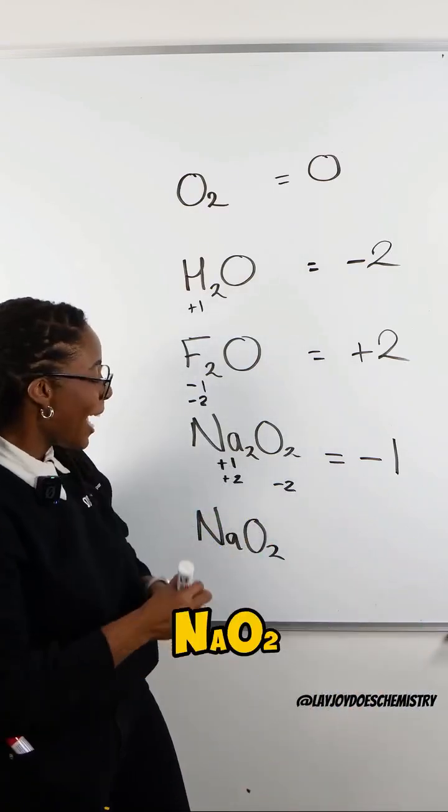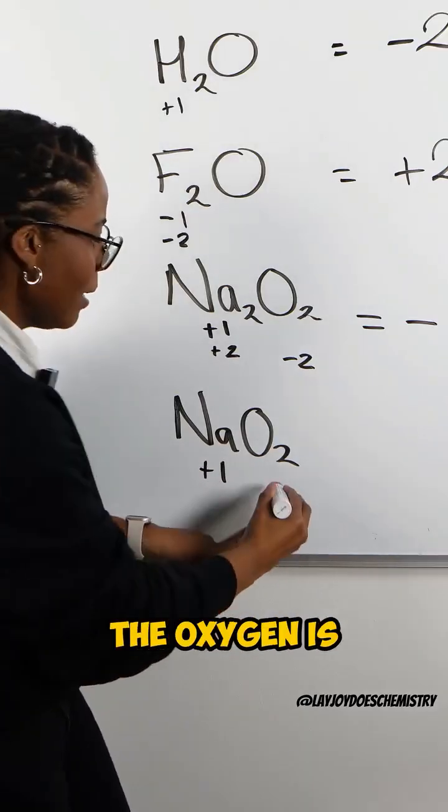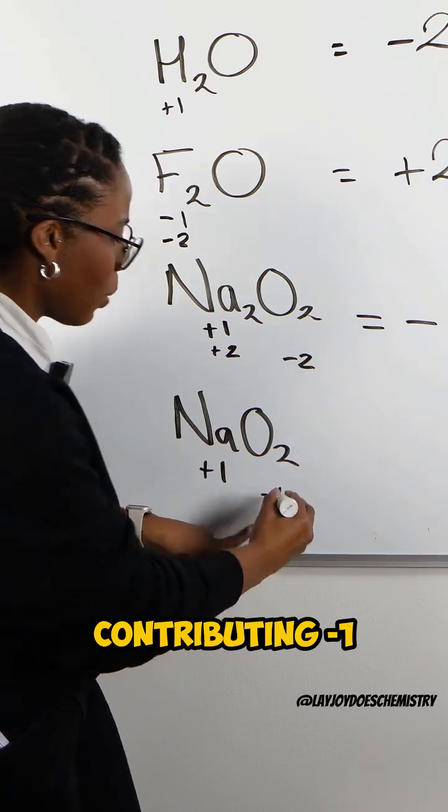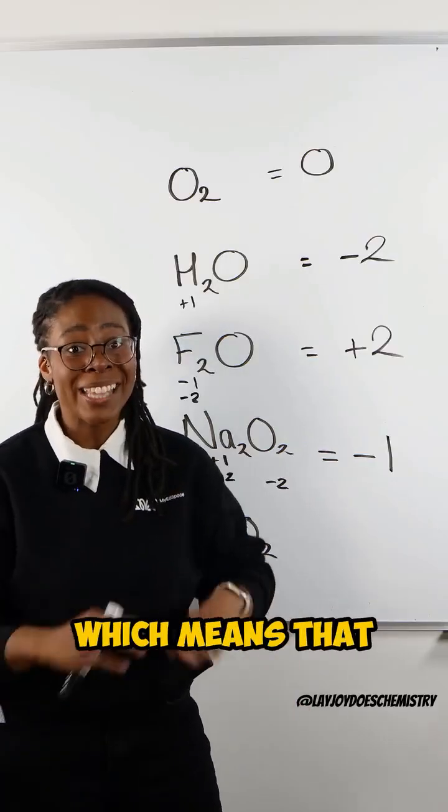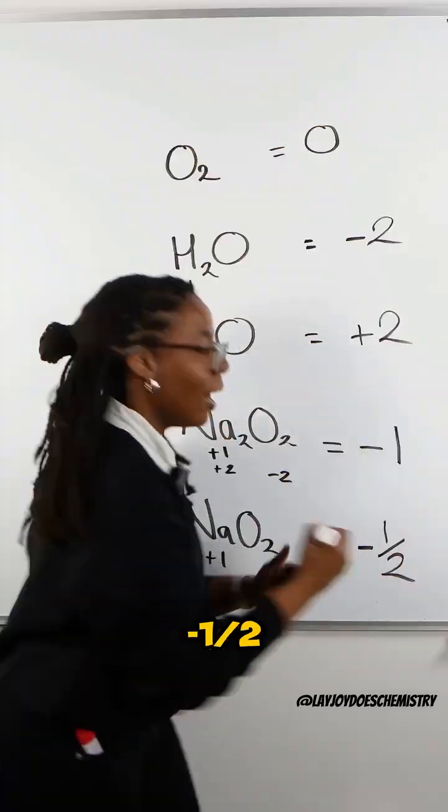Here we have NaO2, where again the sodium has an oxidation state of plus one, meaning that the oxygens are contributing minus one. There are two of them, which means that the average oxidation state must be minus a half.